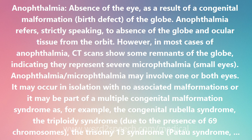Anophthalmia/microphthalmia may involve one or both eyes. It may occur in isolation with no associated malformations, or it may be part of a multiple congenital malformation syndrome — for example, the congenital rubella syndrome, the triploidy syndrome (due to the presence of 69 chromosomes), the trisomy 13 syndrome (Patau syndrome, due to an extra chromosome 13), and the Wolf-Hirschhorn syndrome.